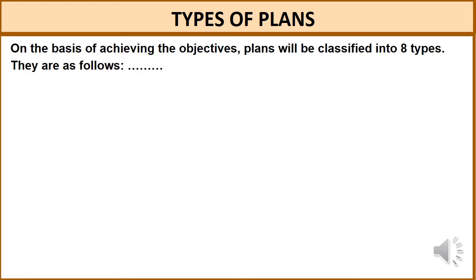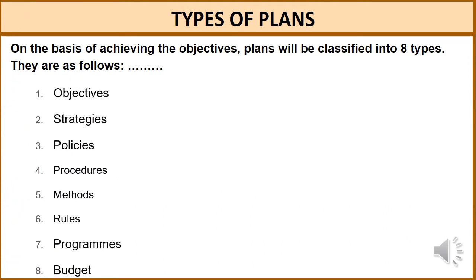On the basis of achieving the objectives, plans will be classified into eight types: objectives, strategies, policies, procedures, methods, budgets, rules, programs, and budget. We will discuss each one in detail in the coming slides.